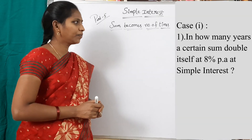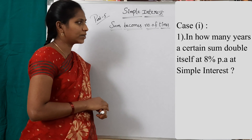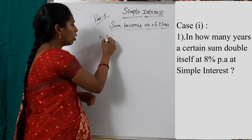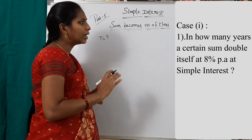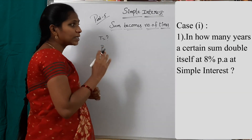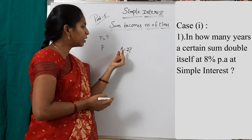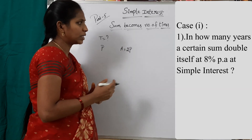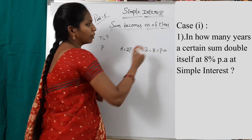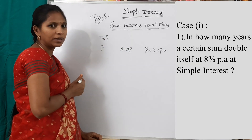In how many years does a certain sum double itself at 8% per annum at simple interest? We have to find out the time period T. A certain sum means the principal P is doubled, so amount A equals 2P. The rate of interest R equals 8% per annum. Now we find this time period using the traditional method with the formula.